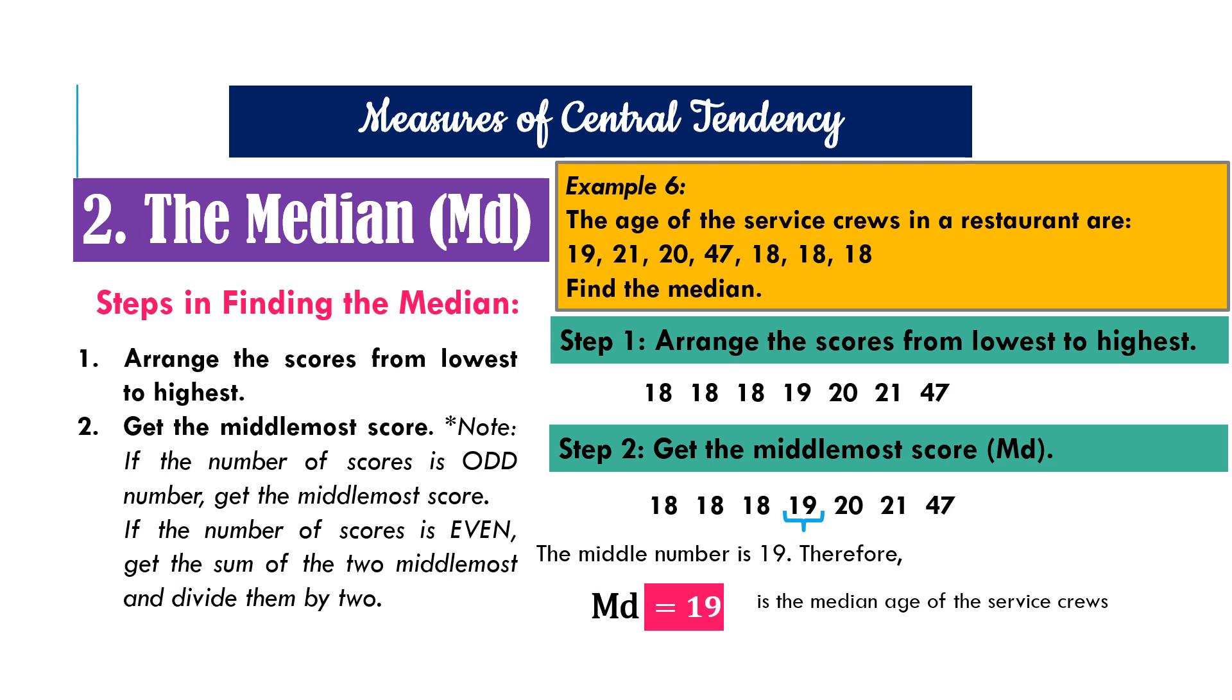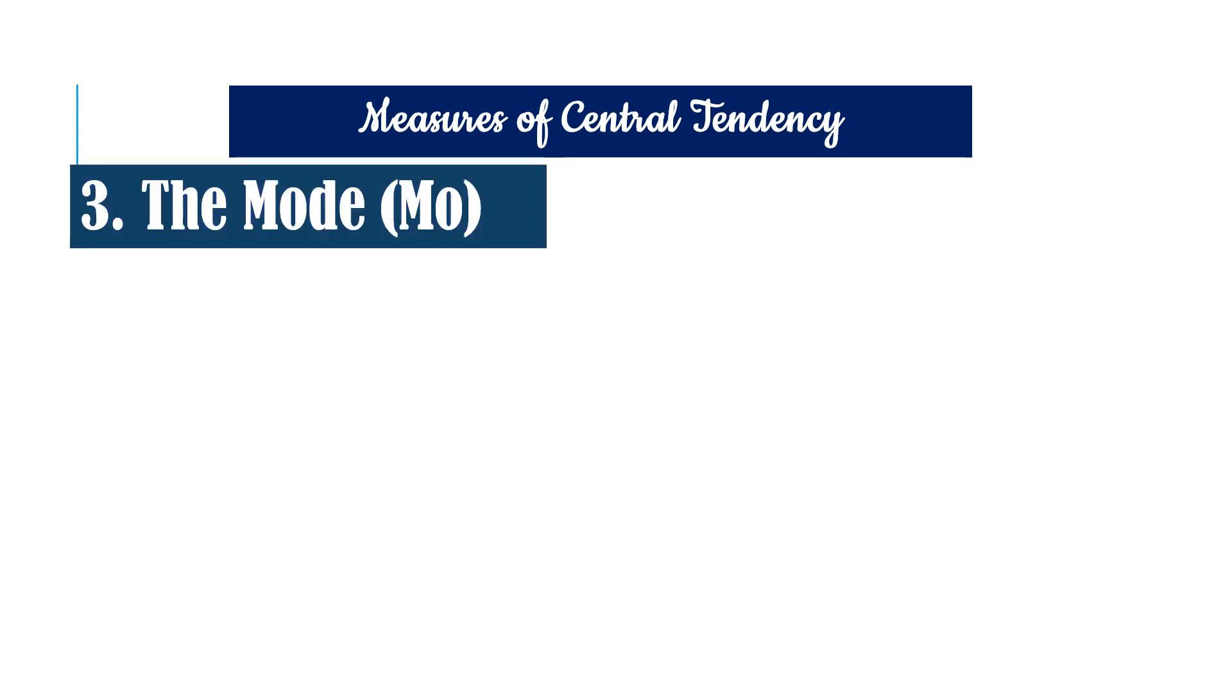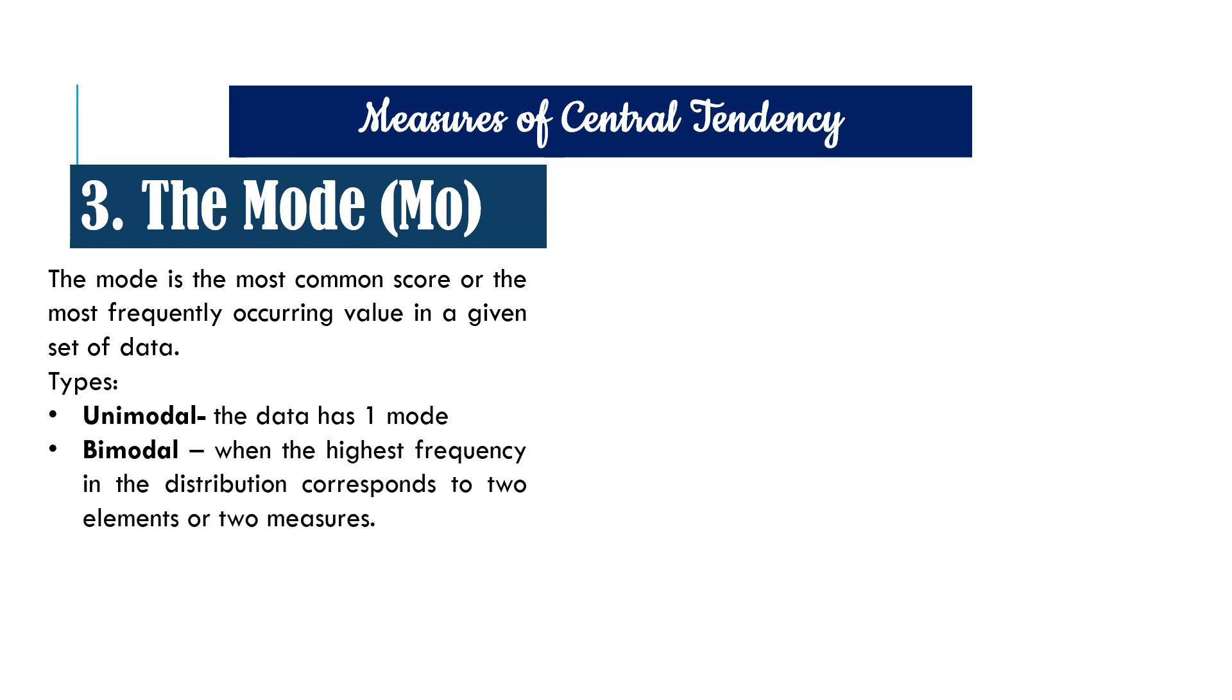So that is how simple it is or how easy it is to get the median of an ungrouped data. The third measure of central tendency is the mode. The mode is the most common score or the most frequently occurring value in a given set of data. So there are different types. Unimodal if the data has only one mode. Bimodal if it has two modes. And multimodal if it has more than two modes. It is also possible that the data has no mode.